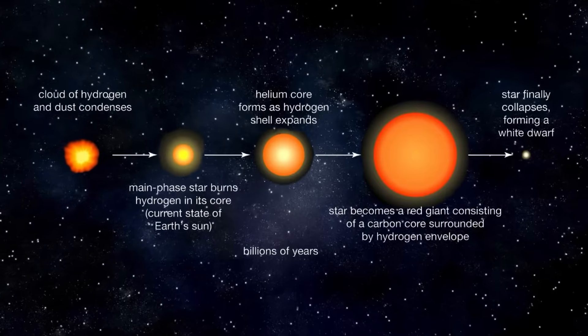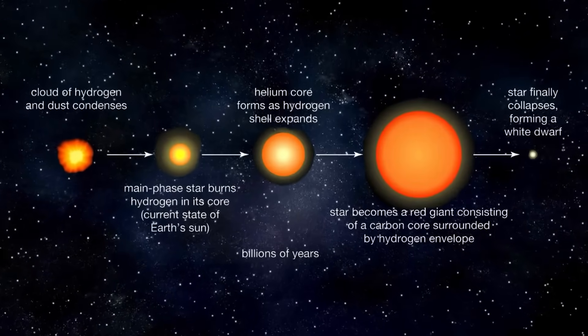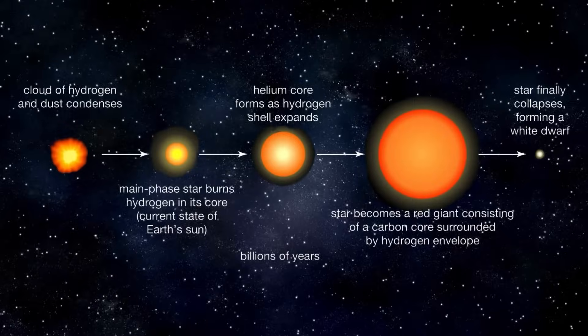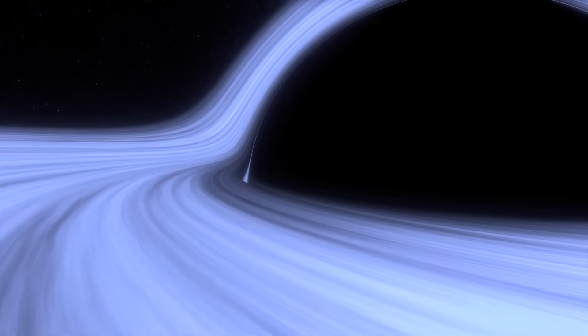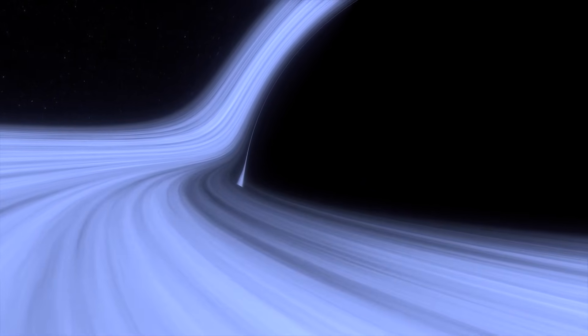Unlike the first pathway, this process bypasses the formation of a traditional star and is believed to have occurred in the early universe. It is thought to give rise to black hole seeds that grow into larger black holes.